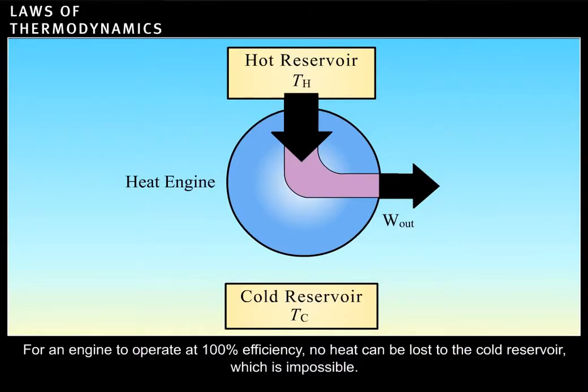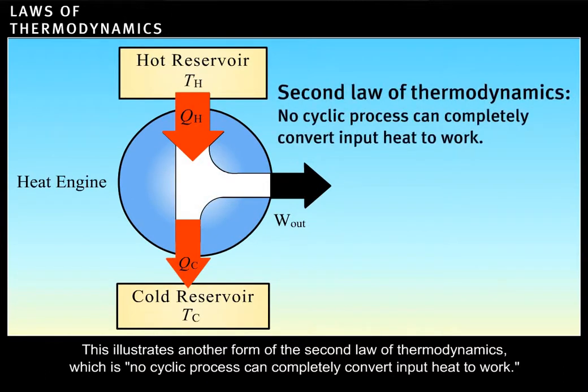For an engine to operate at 100% efficiency, no heat can be lost to the cold reservoir, which is impossible. This illustrates another form of the second law of thermodynamics, which is no cyclic process can completely convert input heat to work.